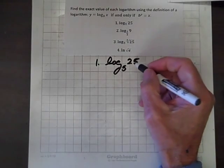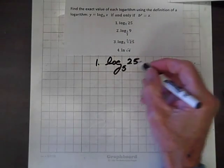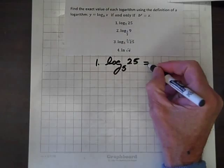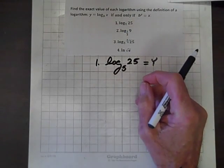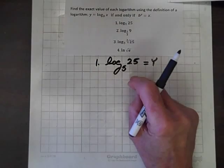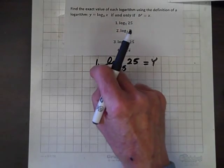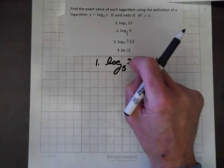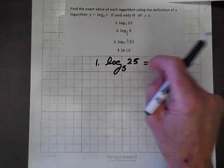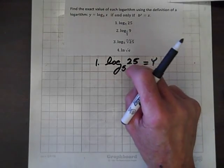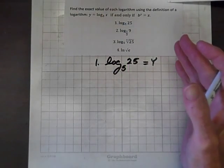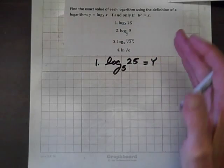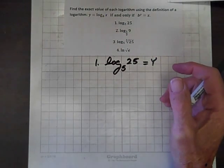We'll set log to the base 5 of 25 equal to y. And I must stress — if you say this right, 'log to the base 5 of 25 equals y,' say it right, you'll think it right, and your probability of doing it right improves.